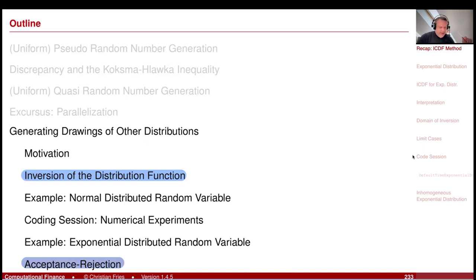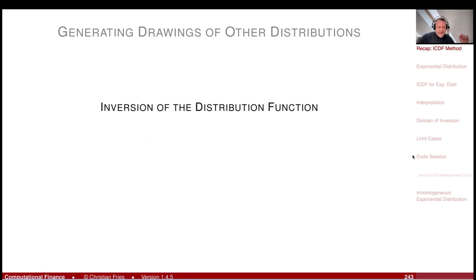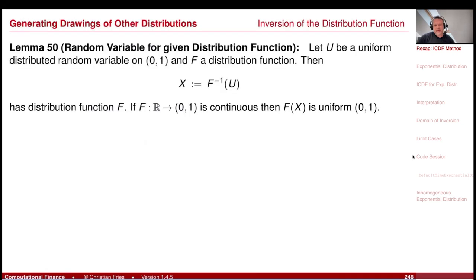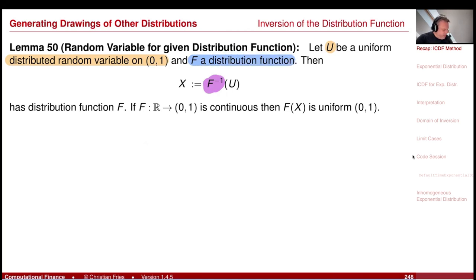We looked at an example of inversion of the distribution function. To recall: given a uniform distributed random variable u on [0,1] — we know how to generate uniform distributed sequences — and given the inverse of the distribution function F, that is F-inverse, then if we apply F-inverse to u we get x, and this x has distribution function F. So by just having code that implements the inverse of the distribution function, we can generate an F-distributed sequence from a uniform sequence.